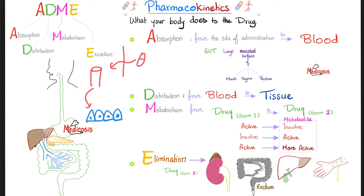The M is for metabolism — it means the drug changes from one form to another. Usually the drug starts as active and then becomes inactive, and this is degradation. For example, acetaminophen (paracetamol/Tylenol) is metabolized by the liver. After it performs its antipyretic and analgesic function, the liver degrades it from something active to something inactive — a piece of trash — and then this piece of trash is eliminated. Elimination of drugs can occur via the kidney, via the biliary system, or via the stool. You can pee the drug out, poop the drug out, or even sweat it out depending on the type of medication.